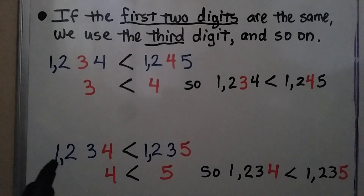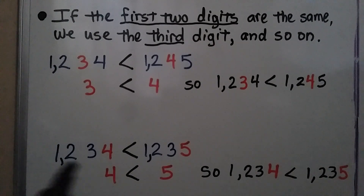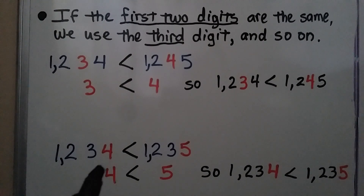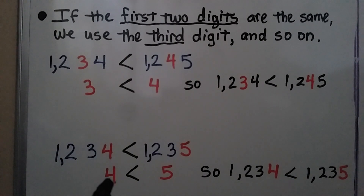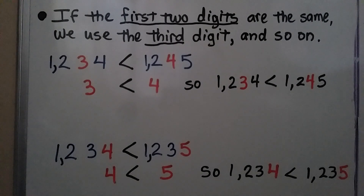And this number starts with one, two, three — and this number starts with one, two, three. They have the same digits in the same place value, so we go to the ones place. This has a four in the ones place; this has a five. Four is less than five, so 1,234 is less than 1,235.